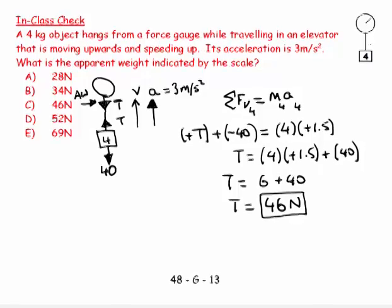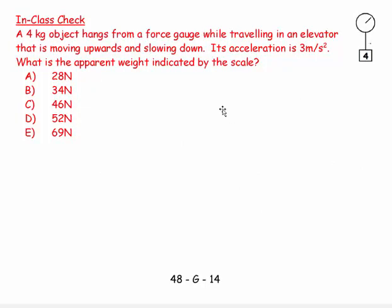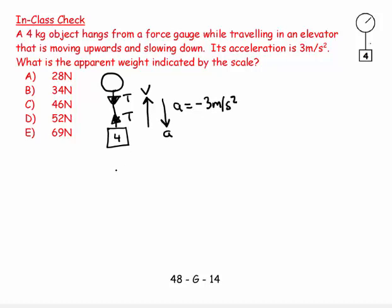Let's look at the other side of this problem. So very similar question, I have a 4 kilogram block being held up and I have a tension upwards and a tension downwards and it goes to a newton metre. And the elevator is moving upwards but it's slowing down, so that means my acceleration is in that direction. And so its acceleration is 3 metres per second squared, but the acceleration is really minus 3 metres per second squared because the acceleration is pointing downwards.